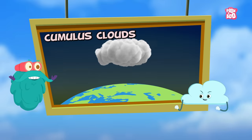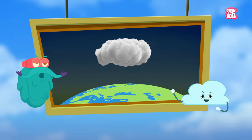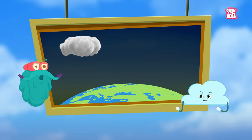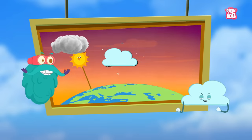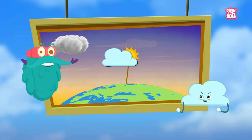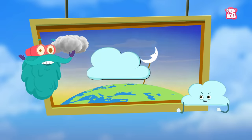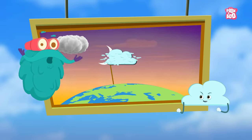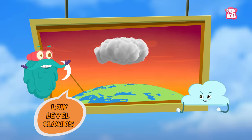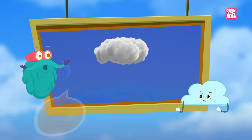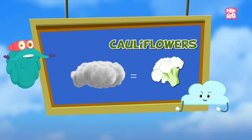Cumulus clouds. This type of cloud is what you see most often. It generally appears in the morning, grows, and then dissolves again towards the evening. They are low-level clouds and often resemble cauliflowers.